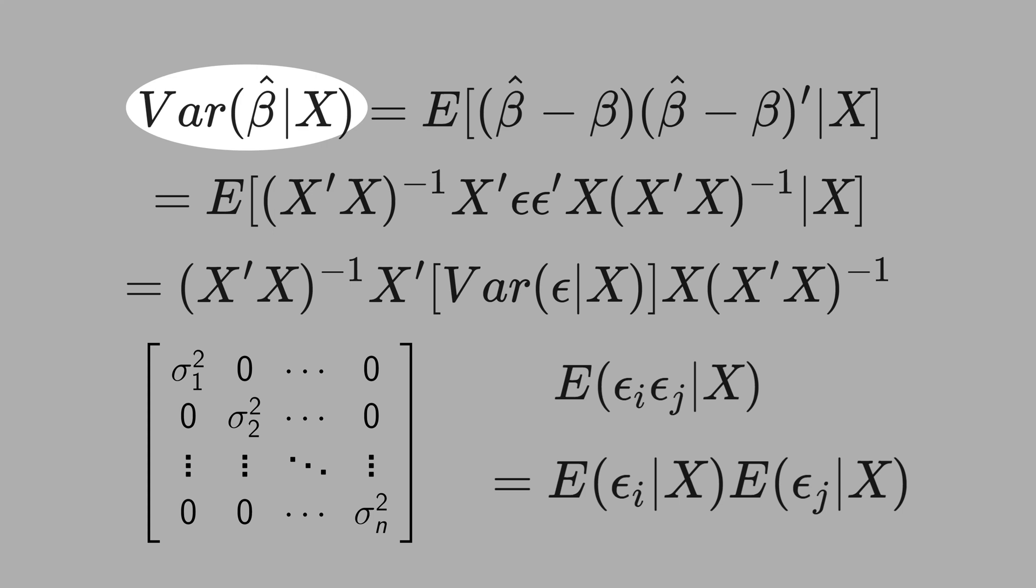To calculate the variance of beta hat under heteroskedasticity, the computer will use this formula here. But in place of the error term, the computer will use the residual, because the error term is an abstraction.